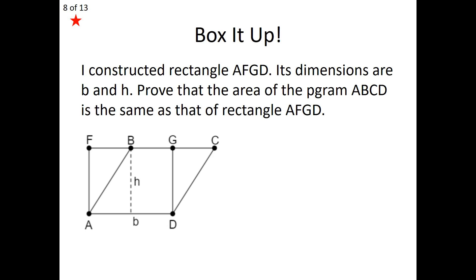Where we begin is by labeling a few areas within our diagram. I'll highlight region A to B, B to G, G to D, and D back to A — I'll call that A sub 1. That section is a portion of the original parallelogram. Next, I label the remaining part: from G to C, C to D, and D back to G — that triangle cut off of our parallelogram, we call A sub 2. Last, the area from B to F, F to A, and A back to B — that little area is A sub 3. The area of the parallelogram is the sum of A sub 1 plus A sub 2, by our area addition postulate.